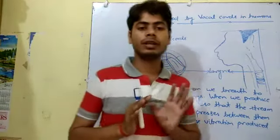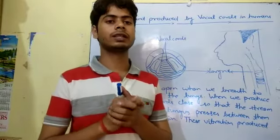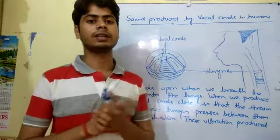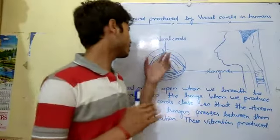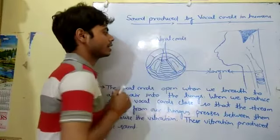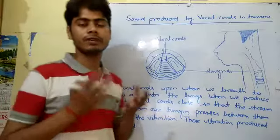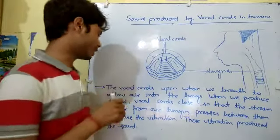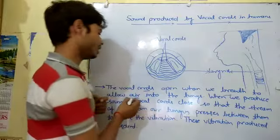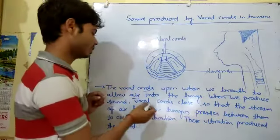There are two vocal cords through which air comes into the lungs. The vocal cords open when we breathe to allow air into the lungs. When we produce sound, the vocal cords close.